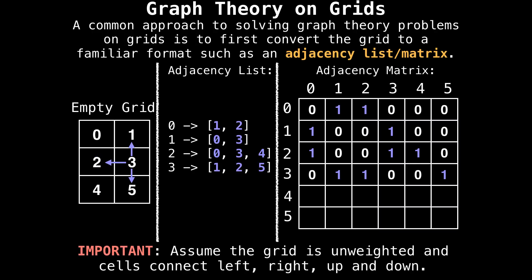Node three with nodes one, two, and five, and so on. And that's basically how you convert a grid to an adjacency list or an adjacency matrix.